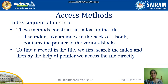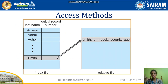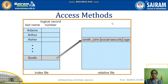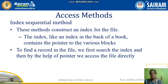The third access method is the index sequential method. In this method, you construct an index for the file — similar to the index page at the back of a book — containing pointers to various blocks. To find a record in the file, you first search the index file for the particular record, and then using that pointer information, you go directly to the actual file and read or write the data. That is the index sequential method.